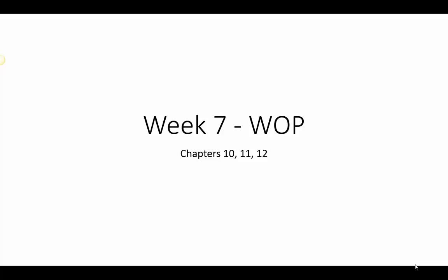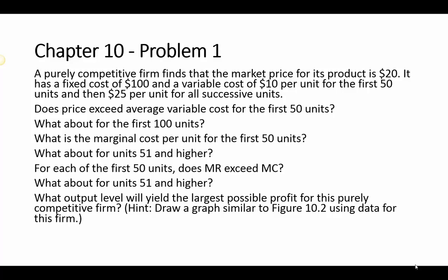Let's jump right in with Chapter 10, Problem 1. Chapter 10 is where we talk about purely competitive firms in the short run. We have a purely competitive firm and the price of the product is $20. We know that price equals marginal revenue equals average revenue — that's what we learn for purely competitive markets. They are price takers.